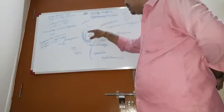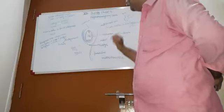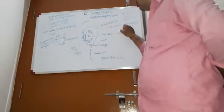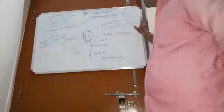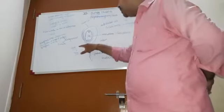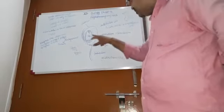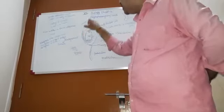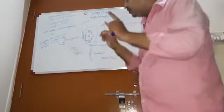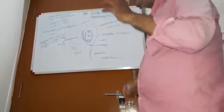The female embryo sac contains an antipodal cell, polar nuclei which form the triploid endosperm, and the egg cell. On the outer side there is a covering which is called the integument. The ovule's four sides are covered by what we call the integument.